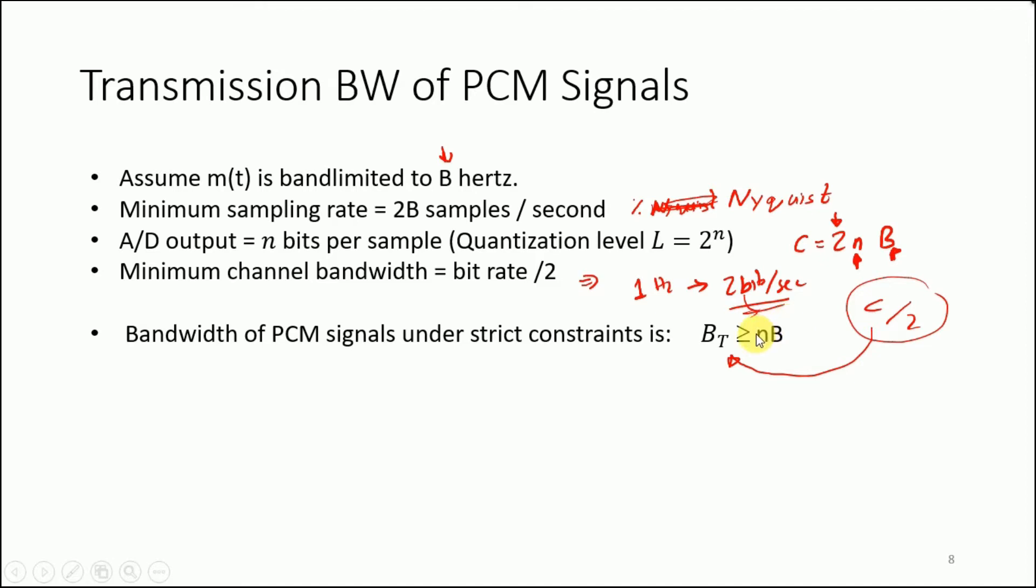The bandwidth of the transmitted signal for PCM requires that it should be greater than or equal to the number of bits times the bandwidth of the message signal. Hence, for any reasonable quantization level L, PCM requires much higher bandwidth than the original M(t), and it is dependent on the quantization levels and the number of bits.